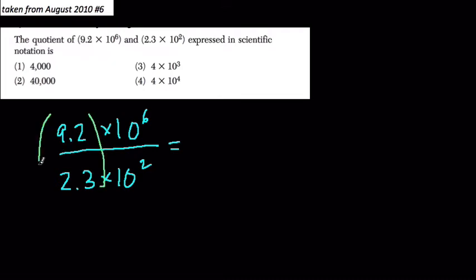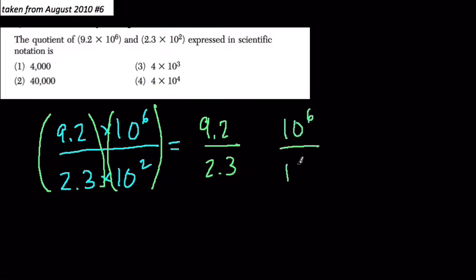is that you can regroup them using the associative property, so that what you're really doing is 9.2 divided by 2.3 in one part, and then 10 to the 6th over 10 squared in another part, and multiplication is the operation that brings them together.